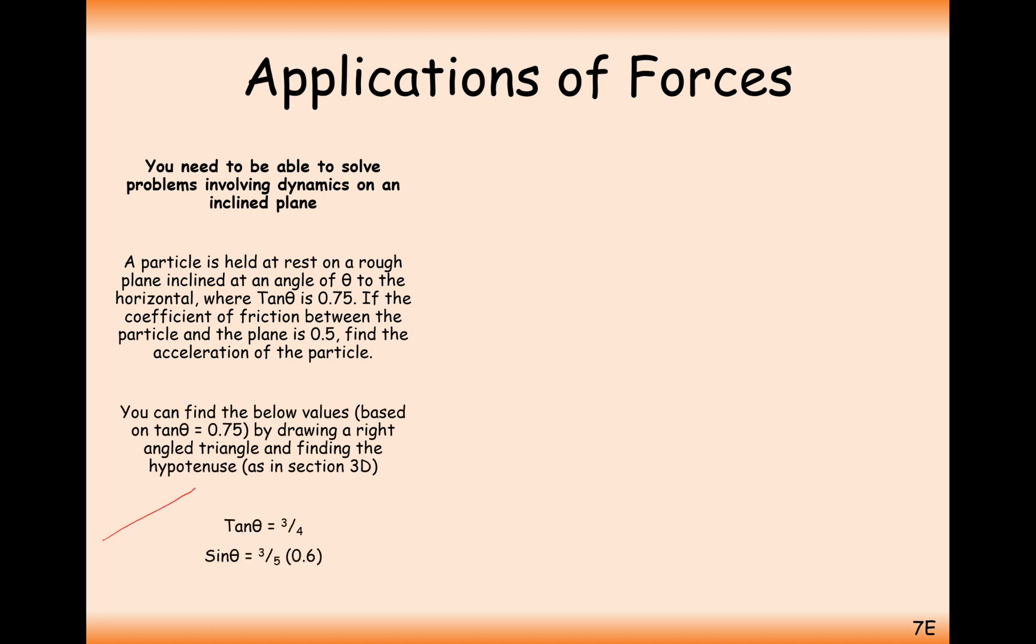We know that from the little right-angled triangle you can draw on the side of your page, that if you've got tan theta equals 3 over 4, you've got effectively a triangle with sides 3 on the opposite and 4 on the adjacent. Tan equals opposite over adjacent. So you know the hypotenuse is 5, and therefore from this little cheeky right-angled triangle, you're going to have sin theta is 3 over 5, and cos theta is 4 over 5.